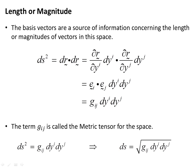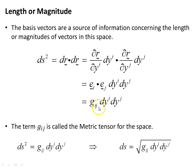The basis vectors are a source of information about the length or magnitudes of vectors in the space. So ds² = dr · dr is the product of this object here. We factor out the increments and we're left with (dr/dy^i) · (dr/dy^j). This is given the term g_ij — g subscript i, j — called the metric tensor for the space, which encodes information about the geometry of that space. So ds² = g_ij dy^i dy^j, or ds is just the square root of that.